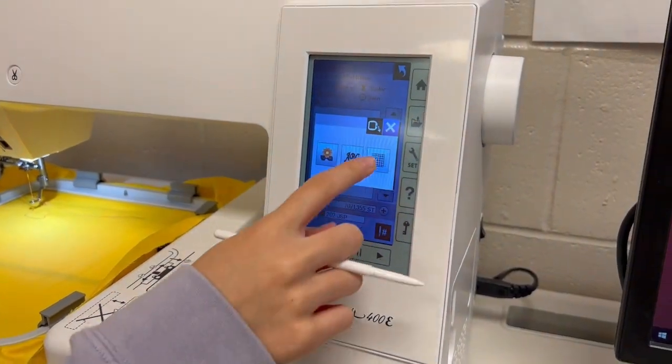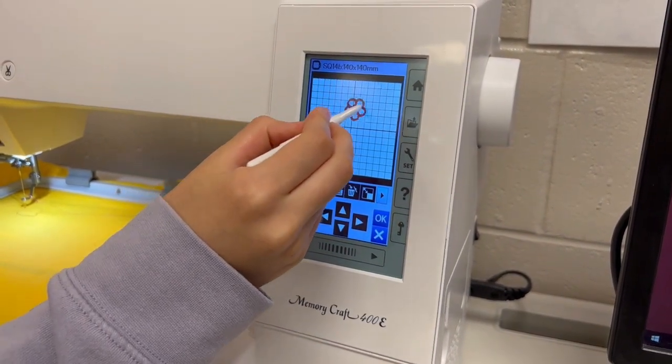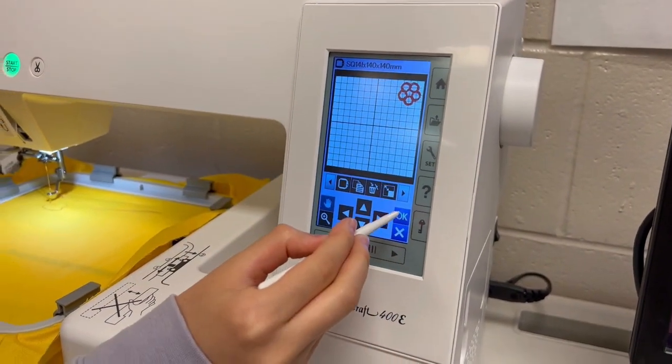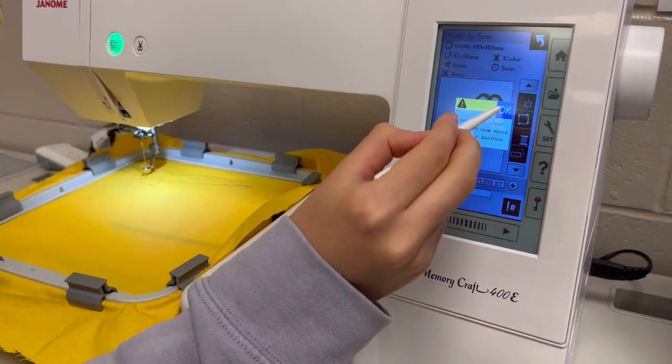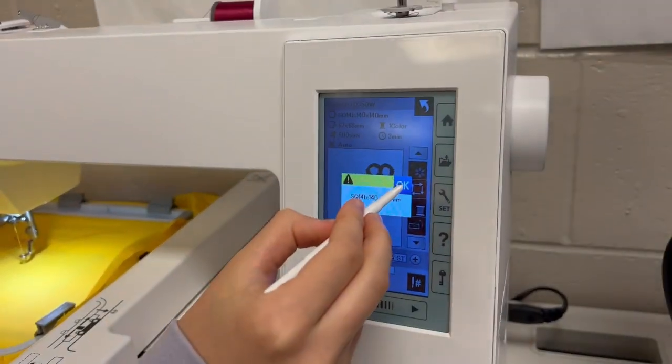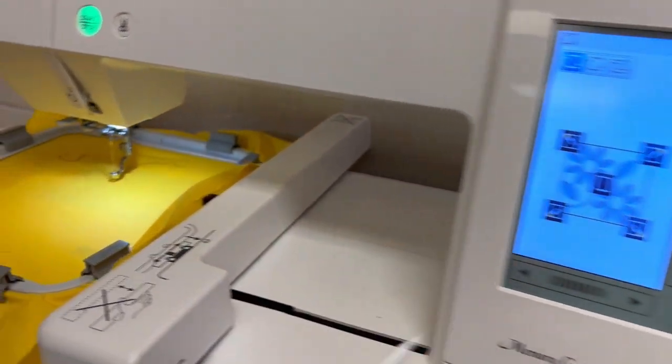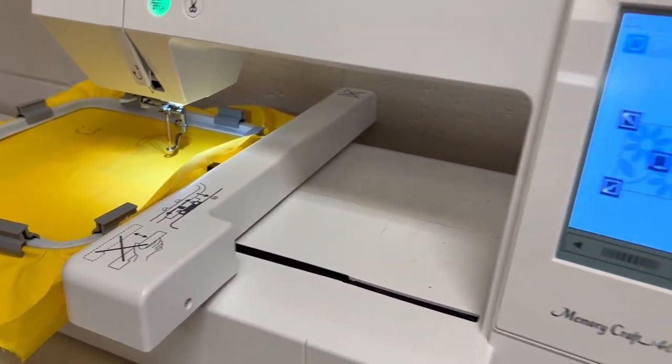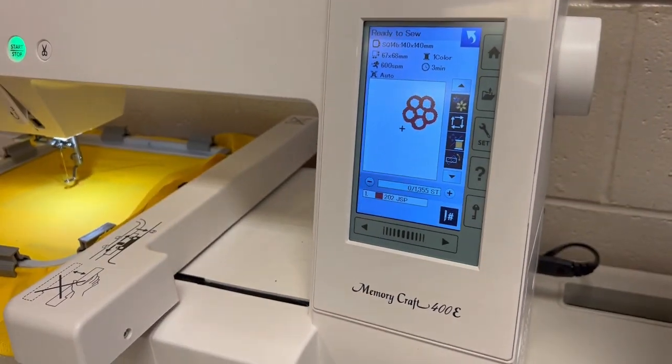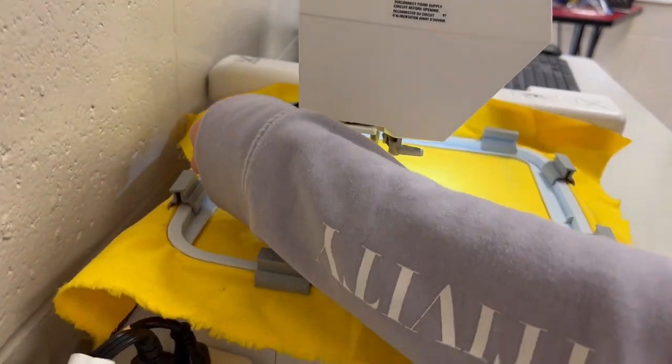After selecting your design, position it in the menu to embroider on the desired area. Check to make sure location is correct. Remember to lower foot on the back of the machine.